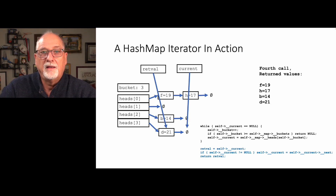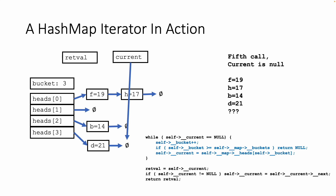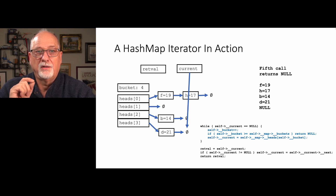On the fourth call, current was pointing to d equals 21, so we don't run the while loop — we return d equals 21 and advance current to null. On the fifth call, current is null, which triggers the while loop. We add 1 to the bucket; the bucket becomes 4. If this bucket inside the iterator is greater than or equal to the total buckets in the map, we return null — and we are done. The fifth call returns null, telling the calling code we are at the end of the list. If you keep yourself straight and draw pictures like this and think it through, this is a surprisingly small amount of code to build a complete iterator for a hash map.